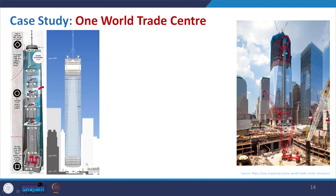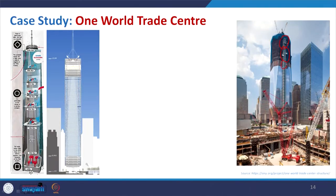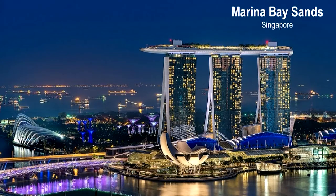An external egress staircase is also attached to the building and has a strong impact on structural behavior. In case of emergency it aids evacuation, and the basic form of the building allows a fire staircase or egress staircase to be incorporated, helping the structure to perform better.